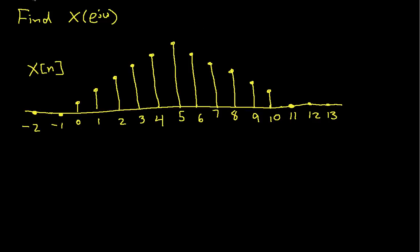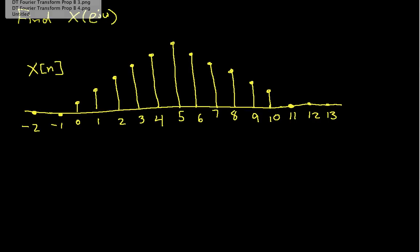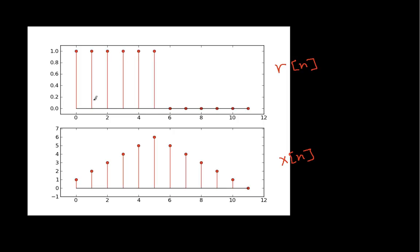If I look at the signals that I have, x[n] is the triangle wave, and it turns out that I can get x[n] by taking r[n], which is a rectangular signal. It is 0 for values of n less than 0, and 0 for values of n greater than 5, and between 0 and 5 it's 1. I take that signal and convolve it with itself.